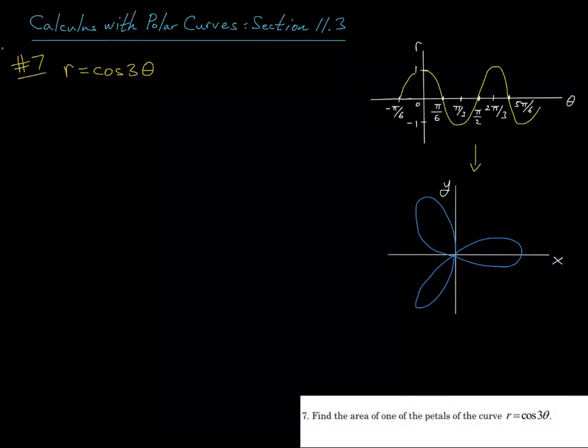Okay, so the last video in section 11.3, we're going to look at question 7. It says, find the area of one of the petals of the curve r equals the cosine of 3 theta.